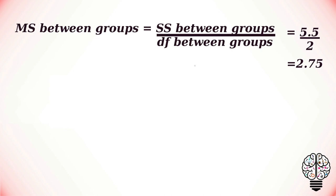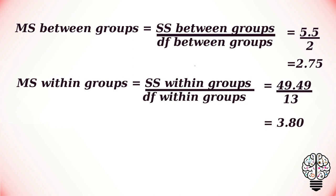And to calculate our mean square within groups, we have to divide the sum of squares within groups by the degrees of freedom within groups. If we do that, we'll get our mean of square within groups value as 3.8.